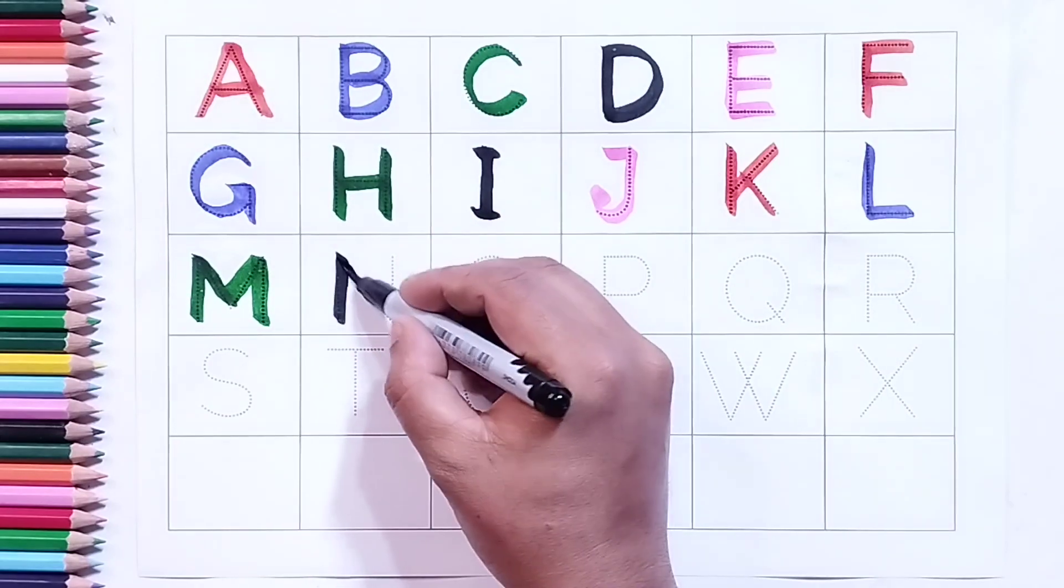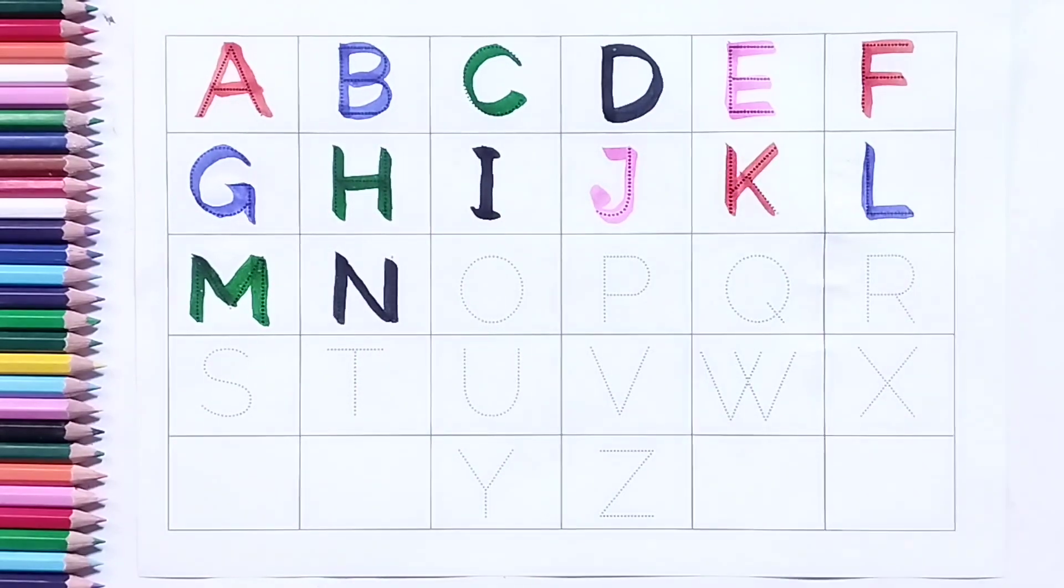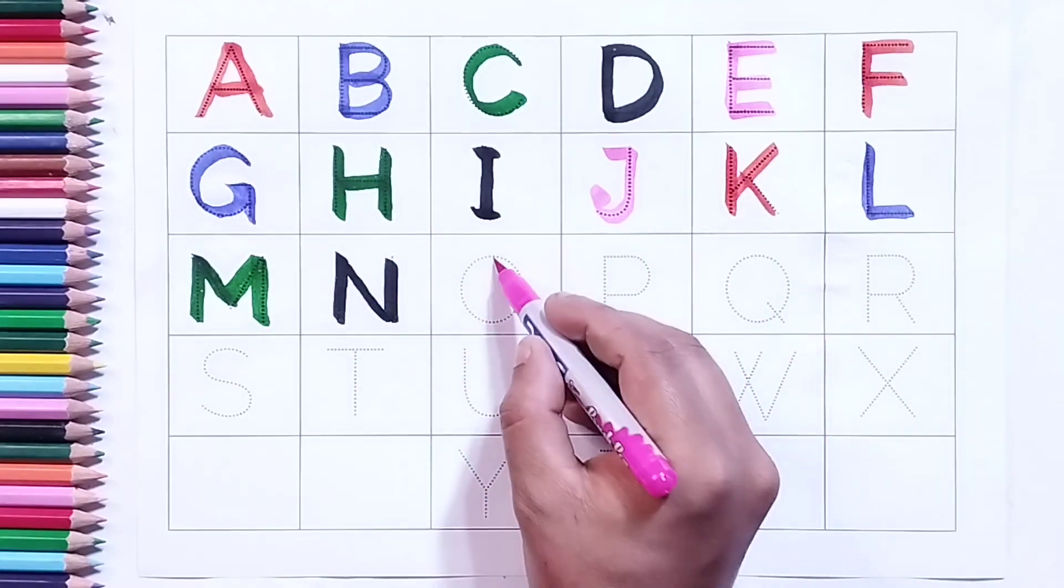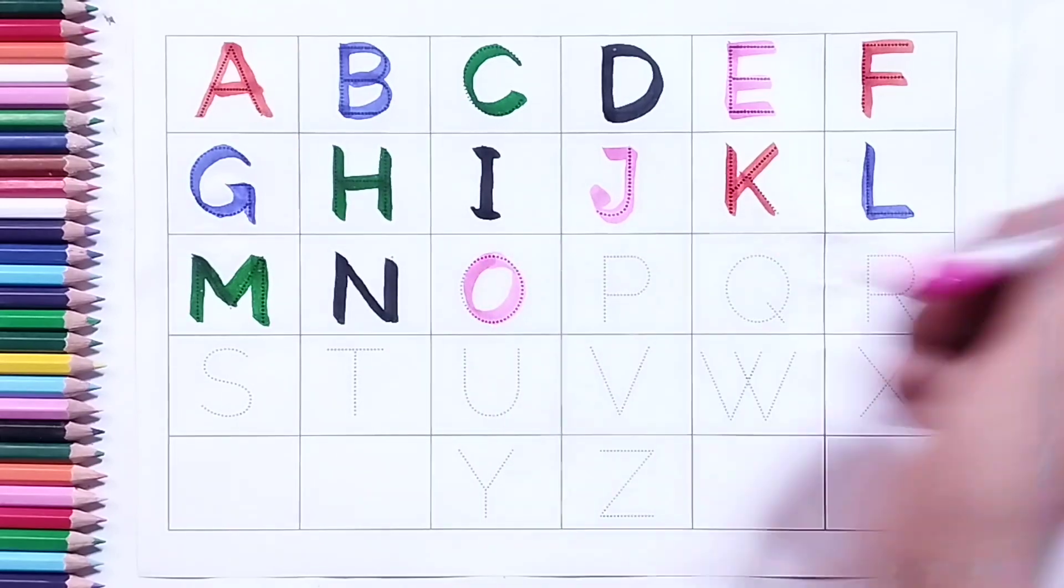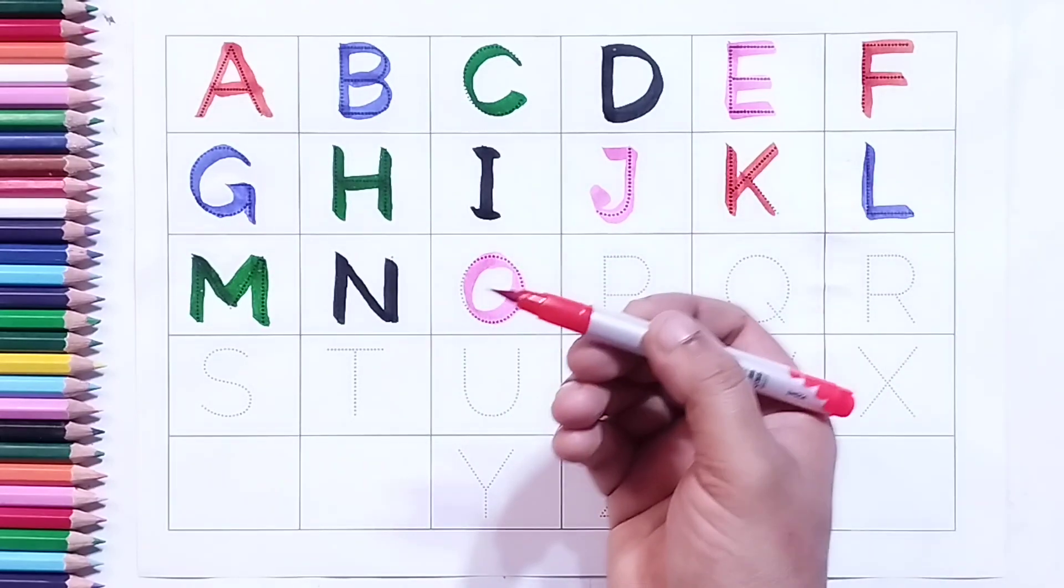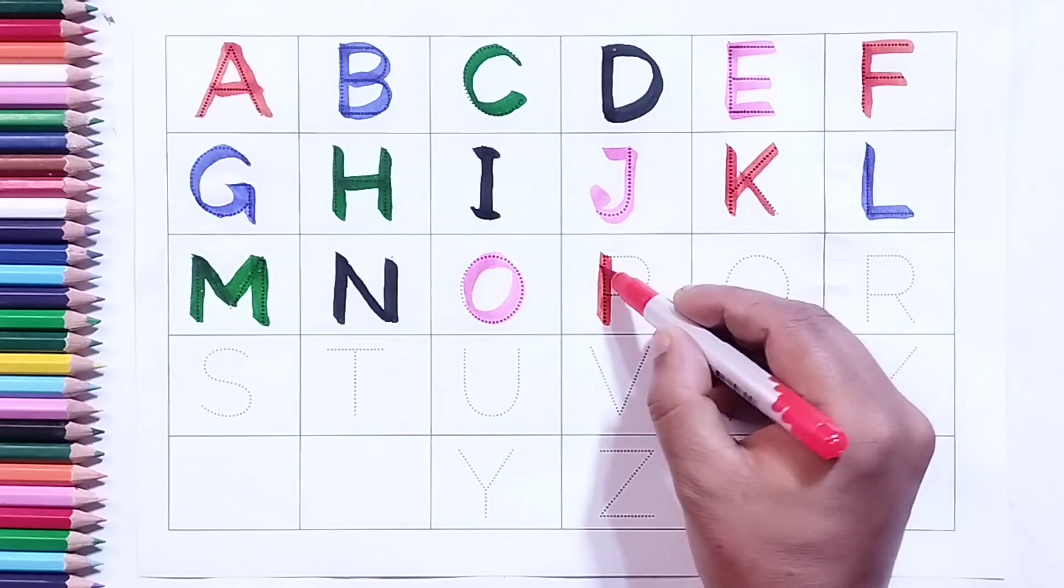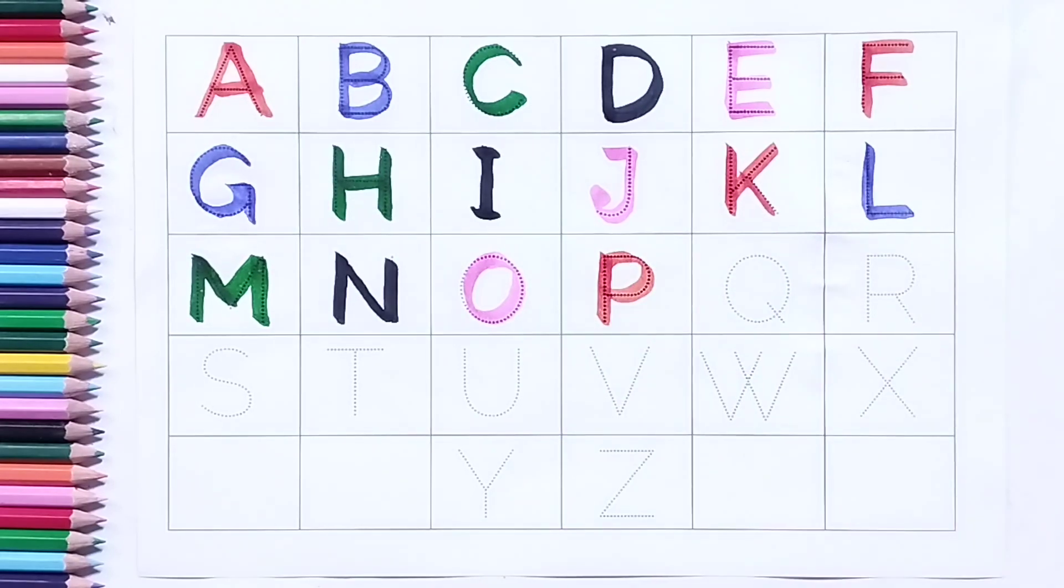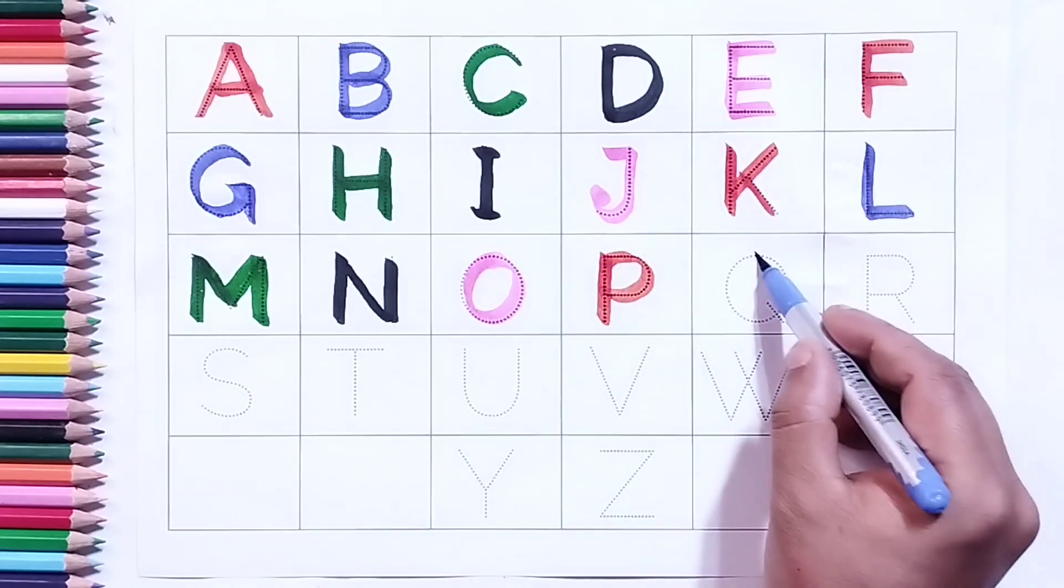Pink color O, O for orange. Red color P, P for parrot. Blue color Q, Q for queen.